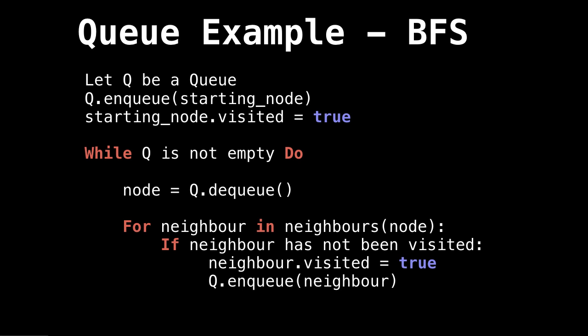So now we have a way of processing all the nodes in our graph in a breadth-first search order. Really useful. A very popular graph traversal algorithm. So now let's look at implementation of queues.